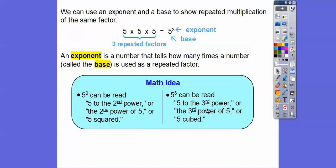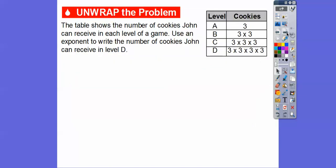I noticed your textbook says 'the third power of 5' and 'the second power of 5' — I don't say it like that. But anyway, here we go. A table shows the number of cookies that John can receive at each level of a game. Use an exponent to write the number of cookies John can receive in level D.